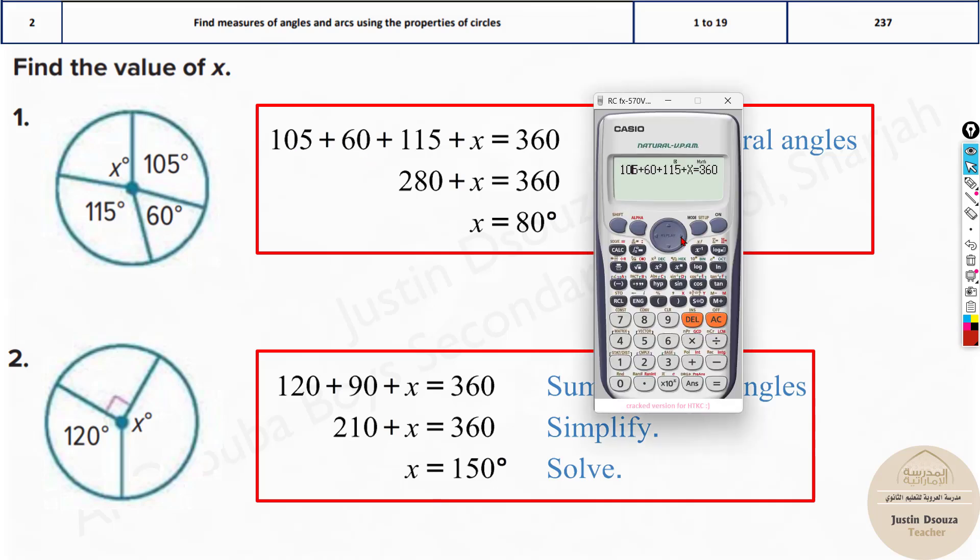Also you can type this equation out directly in the calculator. 105 plus 60 plus 115 plus x, that is by alpha, equal to, that's over here alpha cal, and x is by alpha, and this over here closing the bracket symbol.